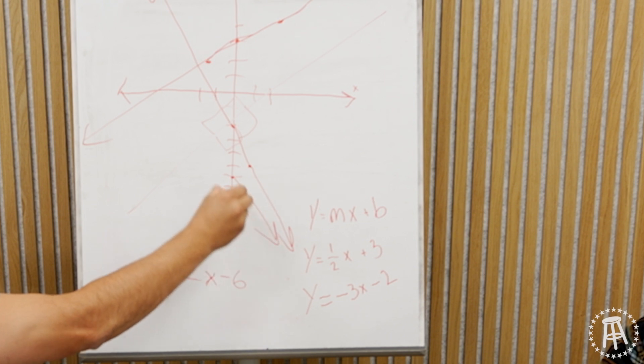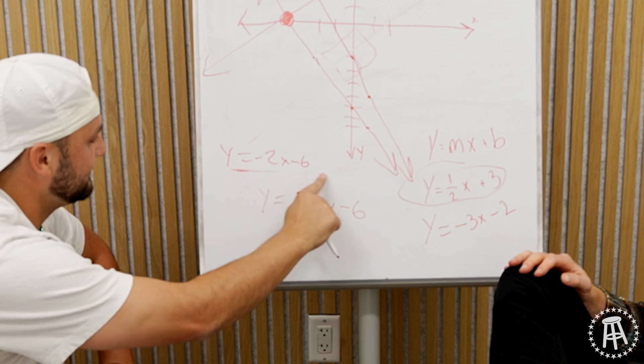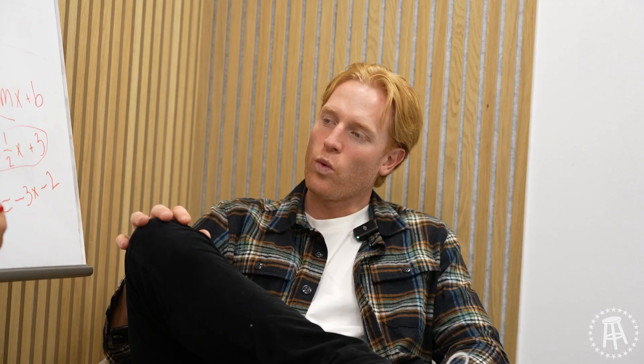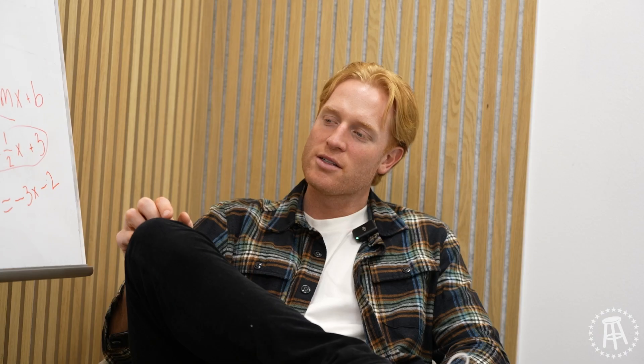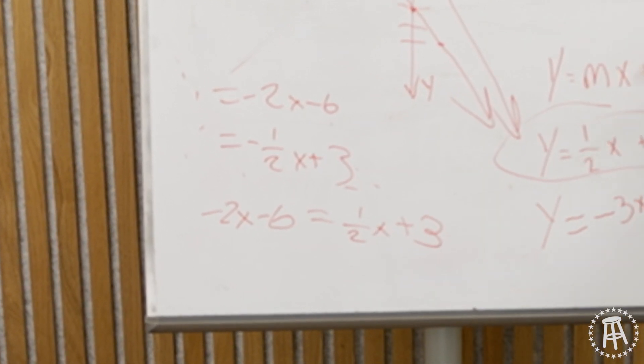Go all the way through the line. If you wanted to find out where those lines intersect, at what point — do you have any idea how you would do that? You can set these two equal to each other. Negative 2x minus 6 equals 1 half x. Equals 1 half x plus 3. Can you solve that equation for me, please?